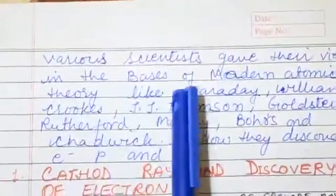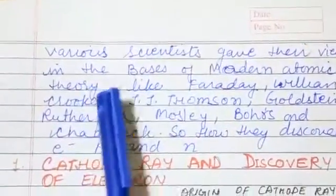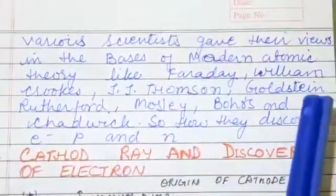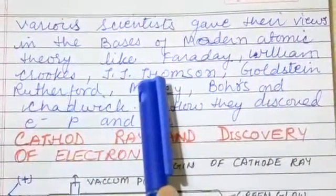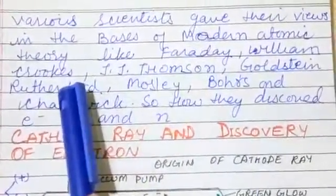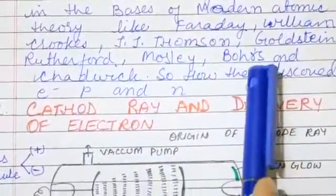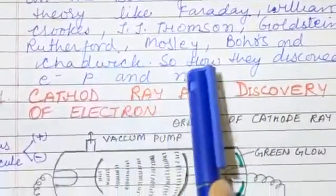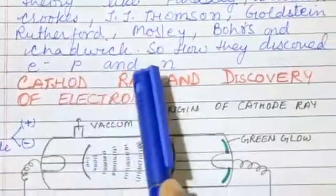Various scientists gave their views in the base of modern atomic theory, like Faraday, William Crookes, J.J. Thompson, Goldstein, Rutherford, Mosley, Bohrs and Chadwick. They discovered electron, proton and neutron.